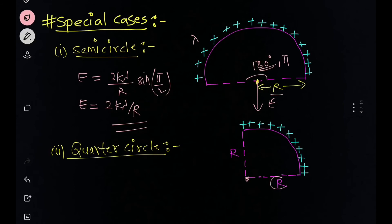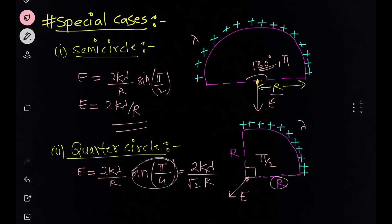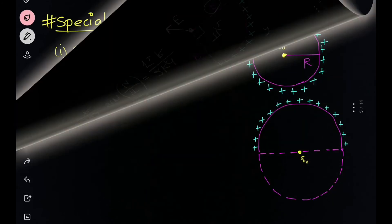For a quarter circle with radius r and uniform charge distribution lambda, the arc makes an angle of 90° (π/2) at the center. The net electric field is E = 2kλ/r·sin(π/4) = 2kλ/r · (1/√2) = 2kλ/(√2·r). The resultant field points at an angle within the plane.